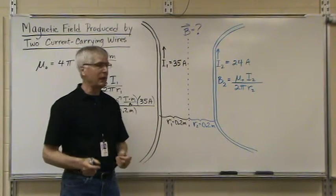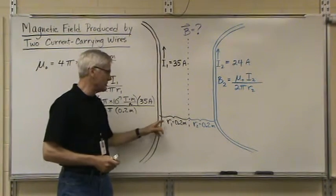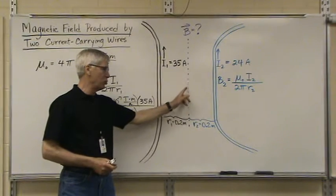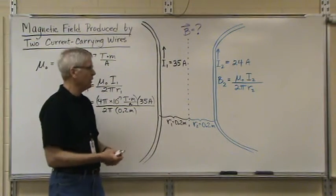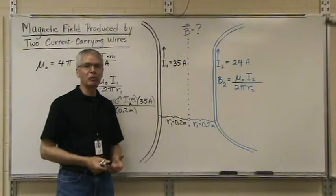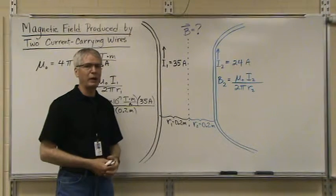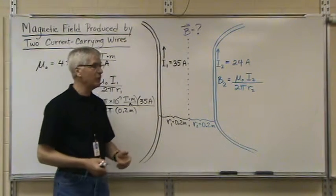In order to determine that we need to know the distance that that point is from each of the wires. There's an equation that we use to determine the magnetic field produced by a current carrying wire. Here's the equation.